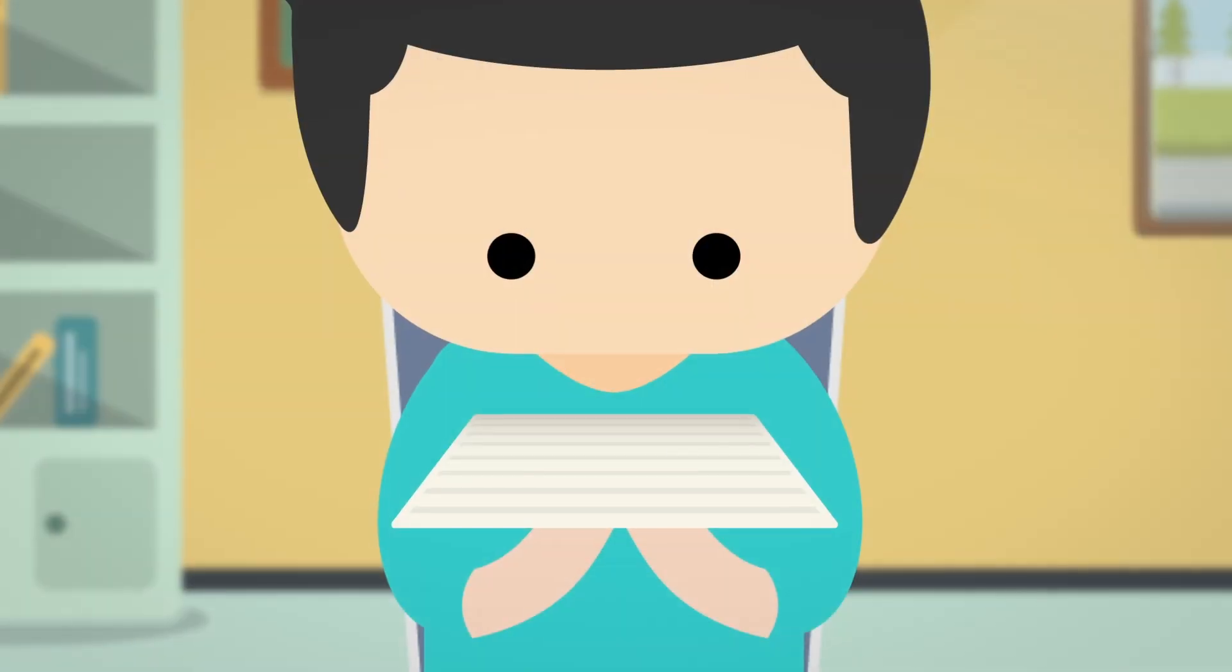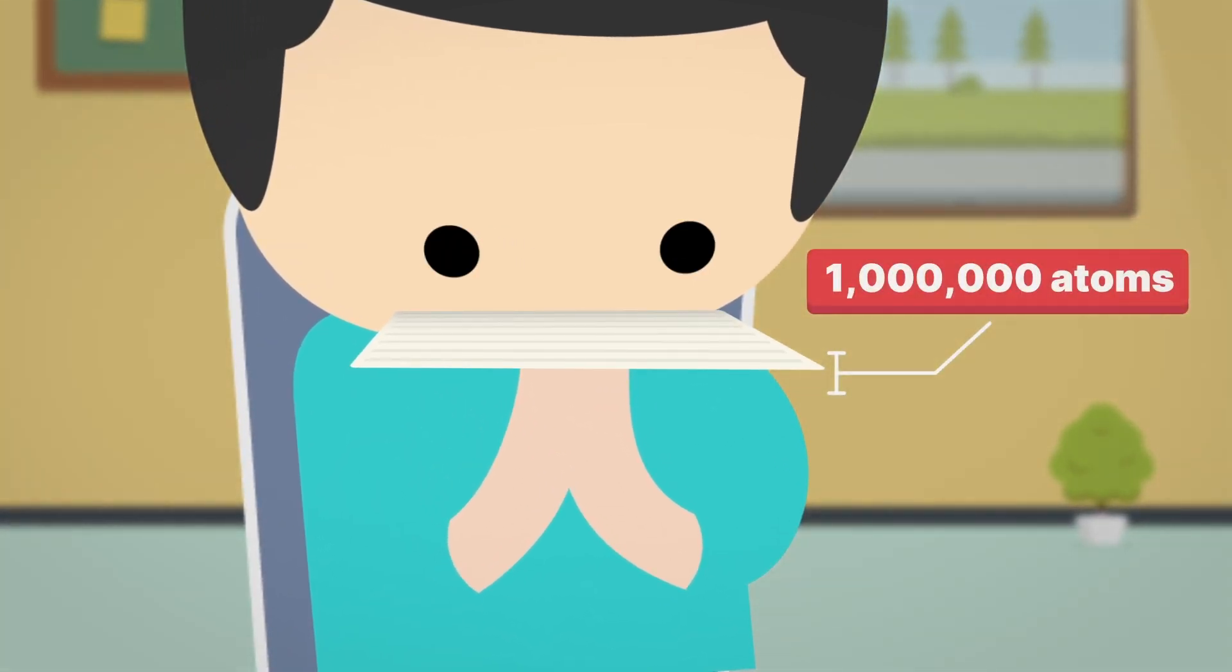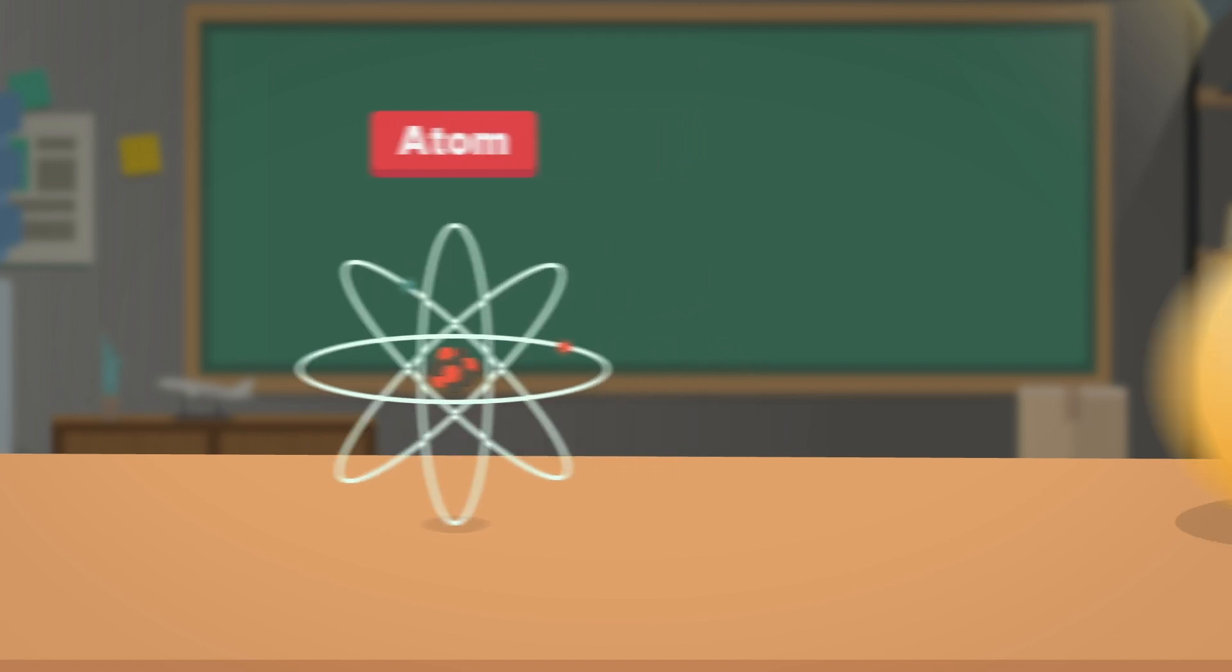How small? Well, take a piece of paper. You'd need a million atoms stacked up to match its thickness. Want to know how small an atom really is? Let's compare it to a ping-pong ball.